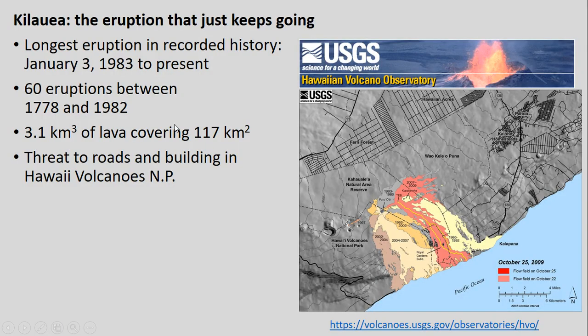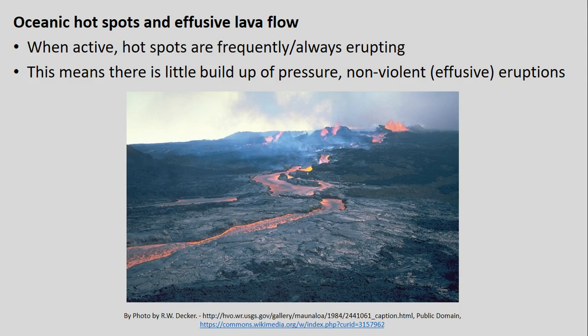Focusing still on our hot spots — the types of eruptions tied to what we're seeing in the example of Hawaii — we see this example of Kilauea, being the longest eruption in recorded history that we know of, erupting since the 1980s to present. Where we have these oceanic hot spots, the lava flows are what we term effusive, meaning there's little buildup of pressure over time — it's kind of always emitting a low amount of lava onto the Earth's surface.